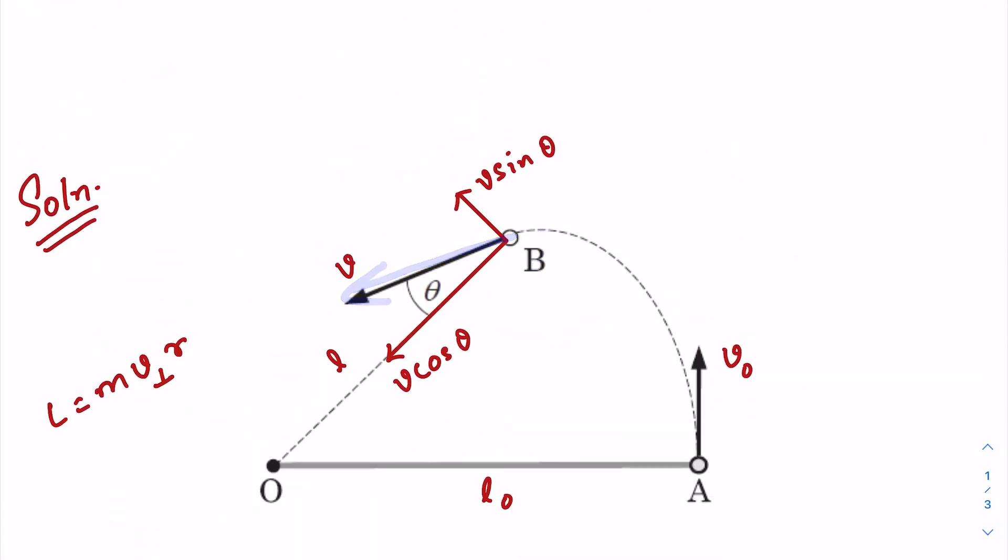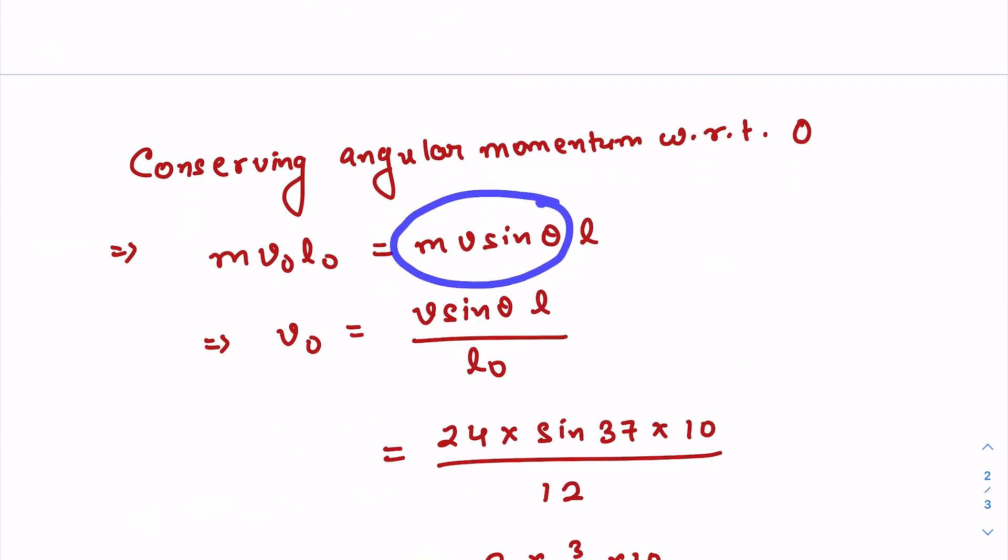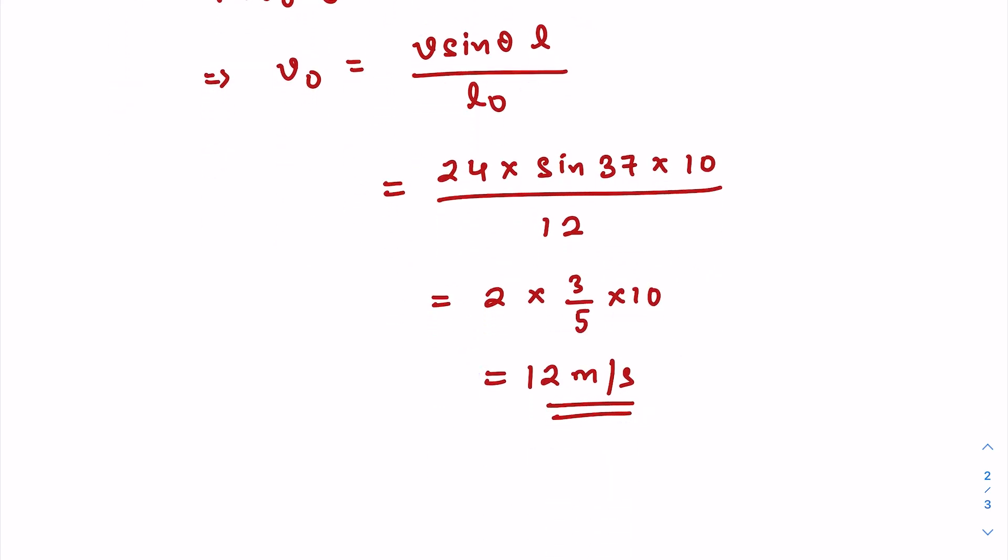Perpendicular to the connecting line, v perpendicular becomes v sin θ. At point B the angular momentum is m times v perpendicular, that is v sin θ times L. Equating these two, we get v₀. Putting all the values, the final answer is 12 meters per second. So I hope you liked this short video. If you liked it, please like and subscribe.